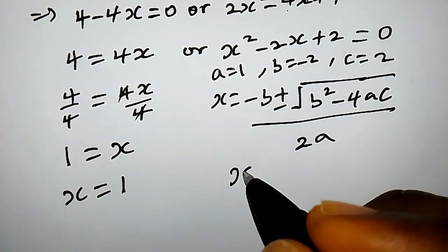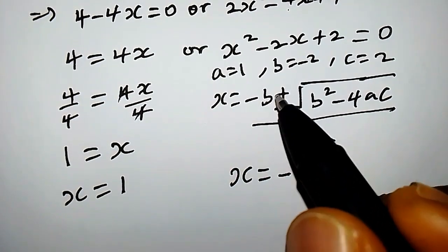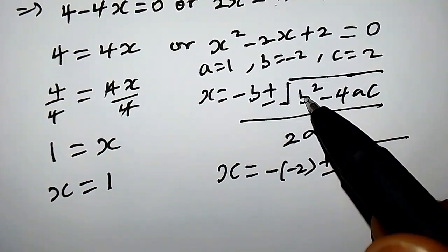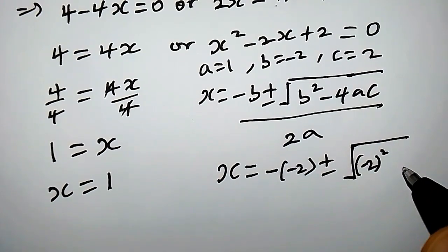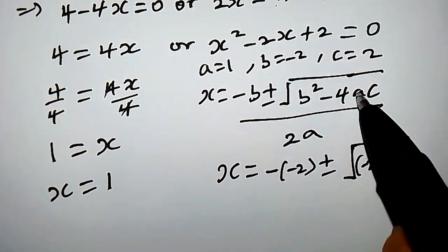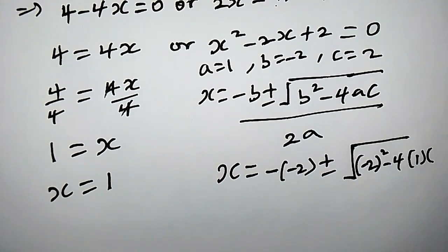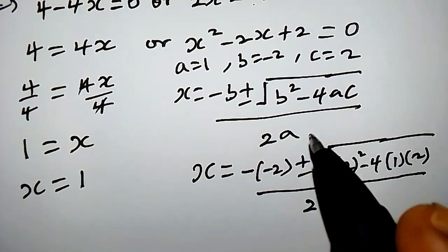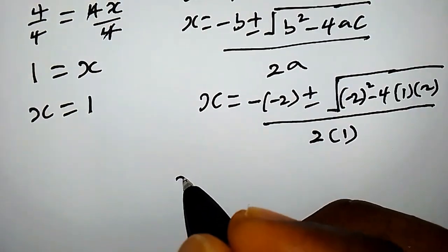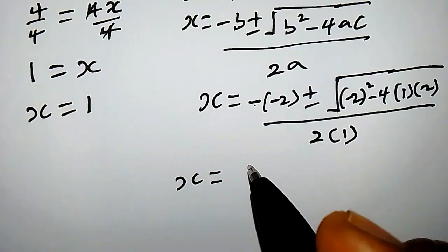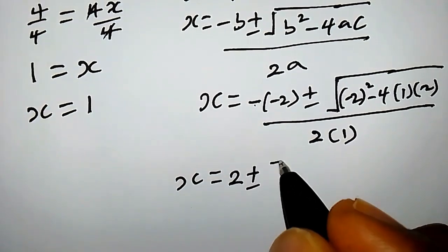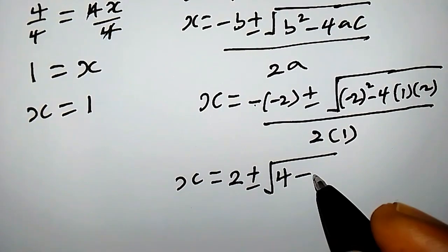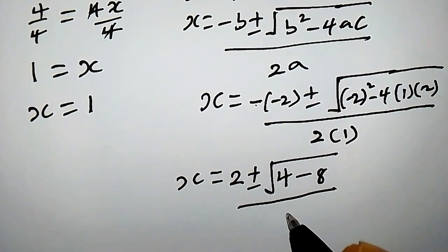So x equals negative b — and since b is negative 2 — that gives us positive 2, plus or minus the square root of b squared (which is negative 2 squared), minus 4 times a (which is 1) times c (which is 2), all over 2 times a (which is 1), giving 2. So x equals 2 plus or minus the square root of 4 minus 8, all over 2, which is 2 plus or minus the square root of negative 4, all over 2.